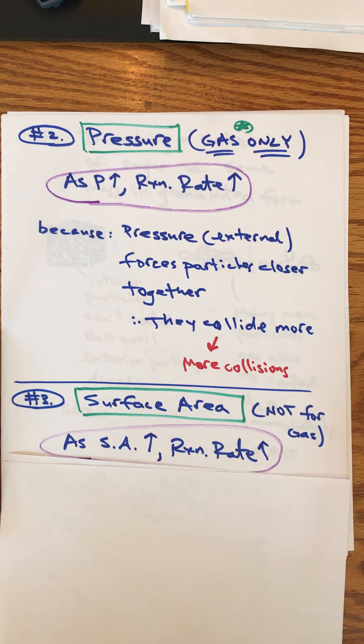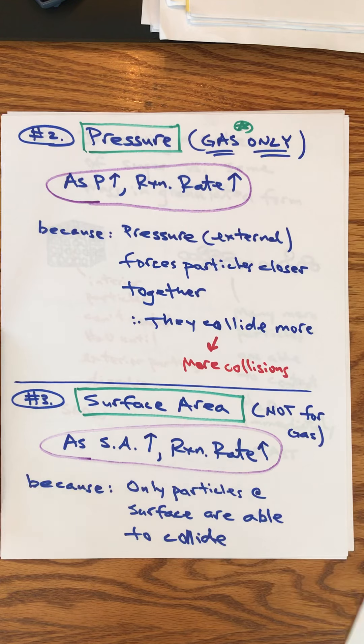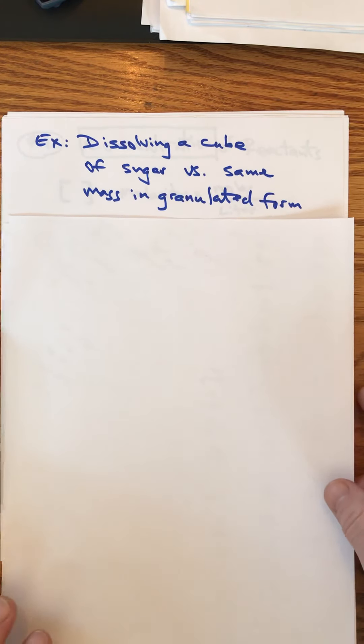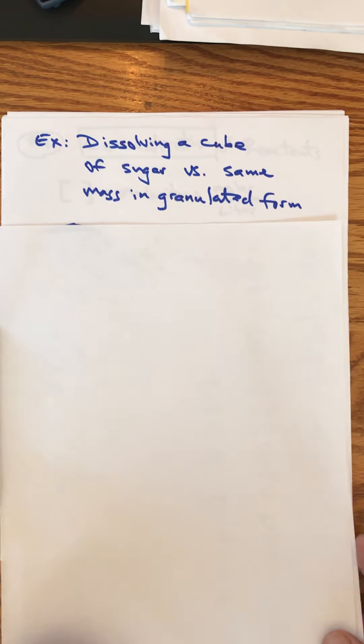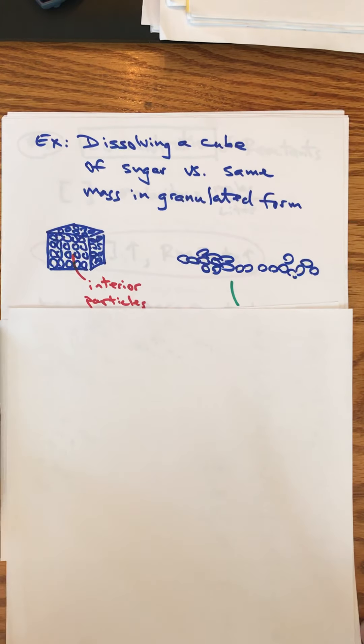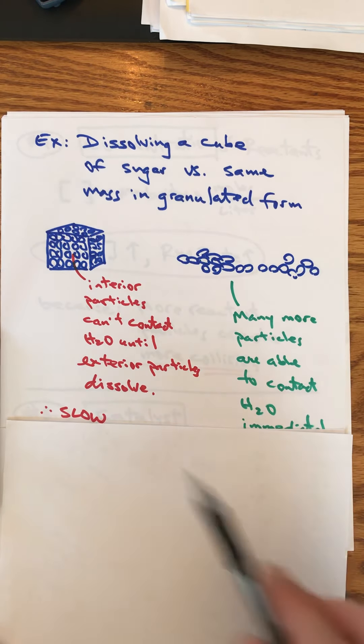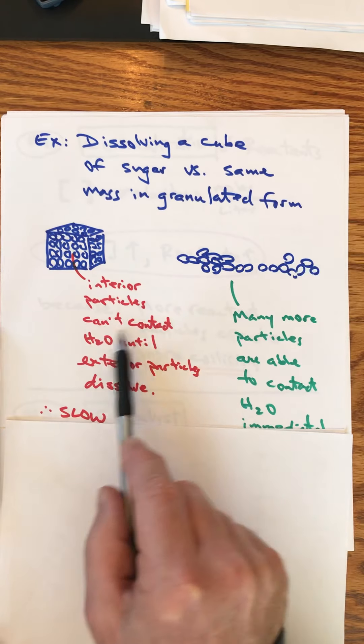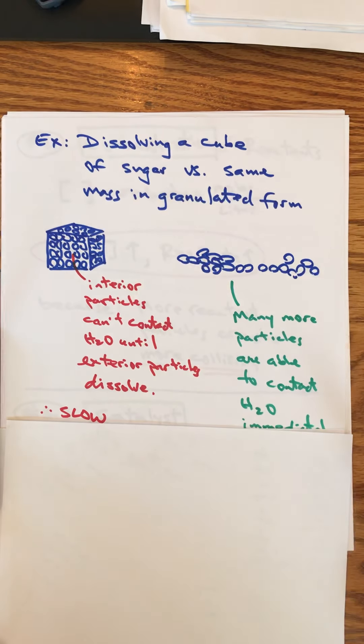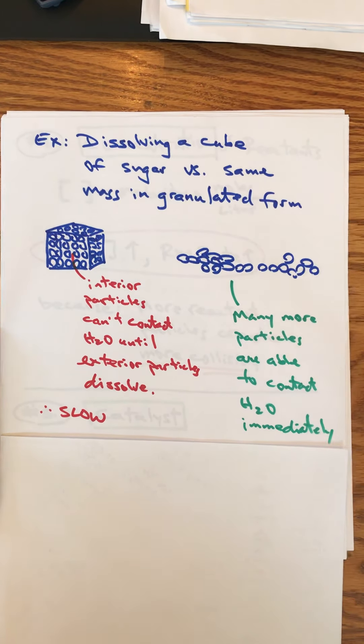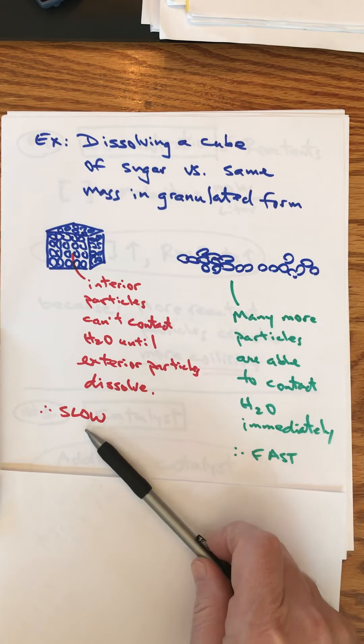State the relationship: as surface area increases, the rate of reaction increases. Why? Only particles that are at the surface are able to collide. If a particle can't collide, it can't react. Think of dissolving a cube of sugar into a cup of tea versus the same amount of sugar in granulated form. Which one's going to dissolve faster? The spoonful of granulated sugar. Here's a cube of sugar - the interior particles can't get to the water or the water can't get to them until the exterior particles dissolve away. But in granulated sugar, many more of the particles are able to contact the water immediately, so it's going to dissolve faster. If the particles aren't at the surface, they can't collide.